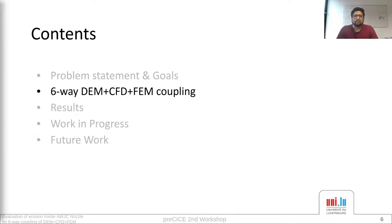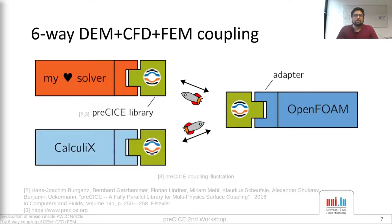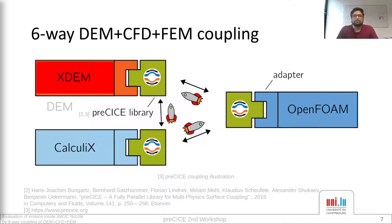Now we will see how we achieve the 6-way coupling. I think everyone who has visited the PreCICE website is already familiar with this image. You also know that the Calculix and OpenFOAM adapters are already available from PreCICE. Here we use XTM, an in-house solver which uses the discrete element method for solving particle motion to have the 6-way coupling. Just a quick note: OpenFOAM will appear as OF and Calculix as CCX henceforth.